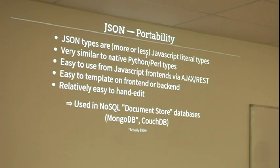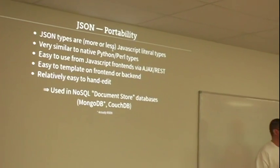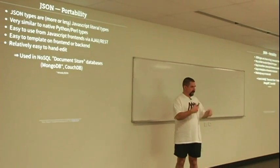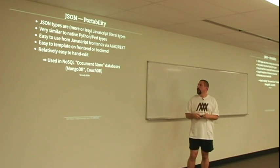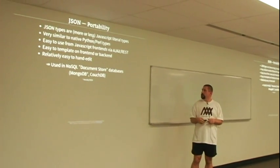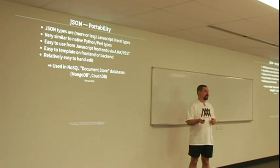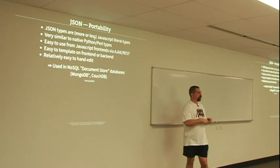One nice thing about it, as opposed to more efficient protocols like protobufs, is that if it's in a database field you can actually hand-edit it and most of the time you won't stuff it up. That can be an advantage during rapid development. For these reasons, it's often used in NoSQL circumstances in document store databases like MongoDB and CouchDB, which use JSON or a binary version of it called BSON to encode data.